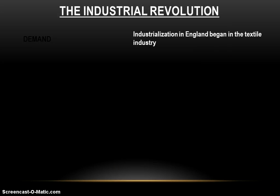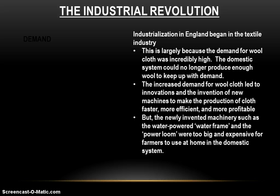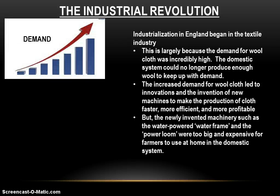When industrialization does begin in England, it happens in the textile industry. The demand for wool had become so high that the domestic system couldn't produce enough to keep up with that demand. The demand for English wool had skyrocketed so much that people just could not produce it fast enough or efficiently enough at home. So the increased demand for wool cloth led to innovations and the invention of new machines to make the production of cloth faster, more efficient, and more profitable. This is really the essence of industrialization — it's innovation, having a need and coming up with a new idea or machine to meet it.